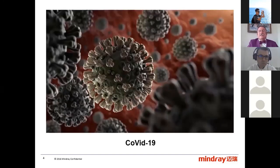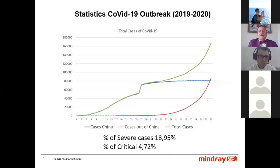Here is a representation of how the virus looks in three dimensions. Here we make a review of the actual statistics of the COVID outbreak. In green, we have the total number of cases per day in the world. In blue, the Chinese cases. Till the middle of the graph, the majority of cases came from China, but after China reached a plateau, the cases outside China — shown in red — began, and now practically all new cases come from the rest of the world.